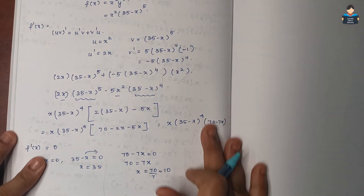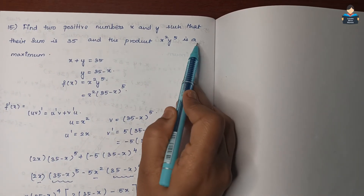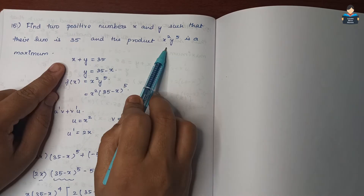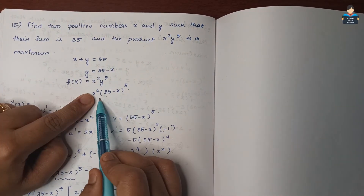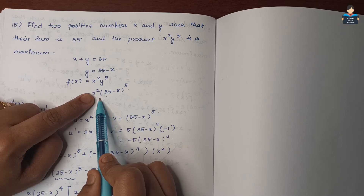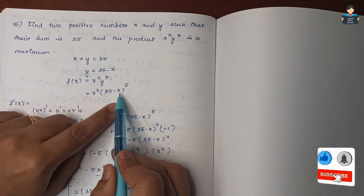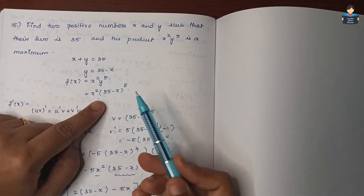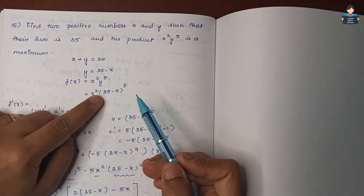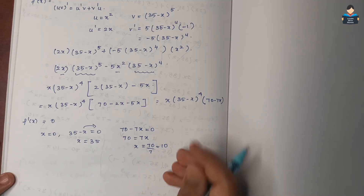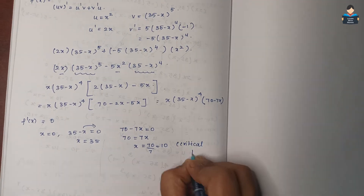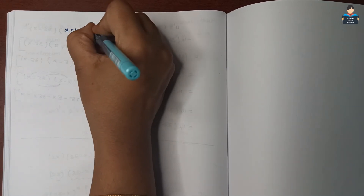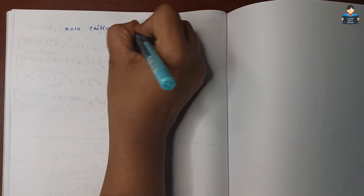Since x = 0 would make the product x²y⁵ equal to zero, and x = 35 would make y = 0, these values cannot maximize the product. So x = 10 is the relevant critical point.